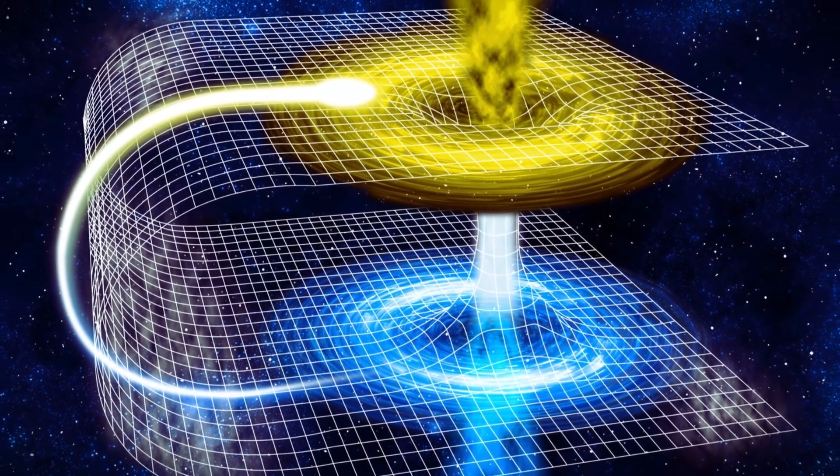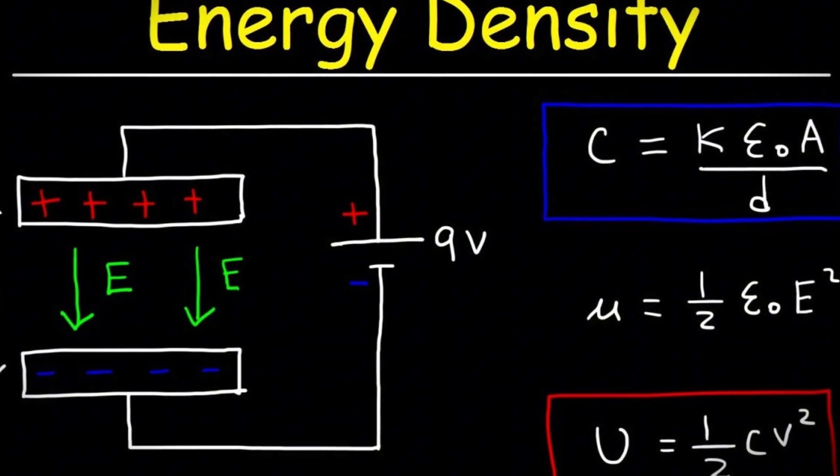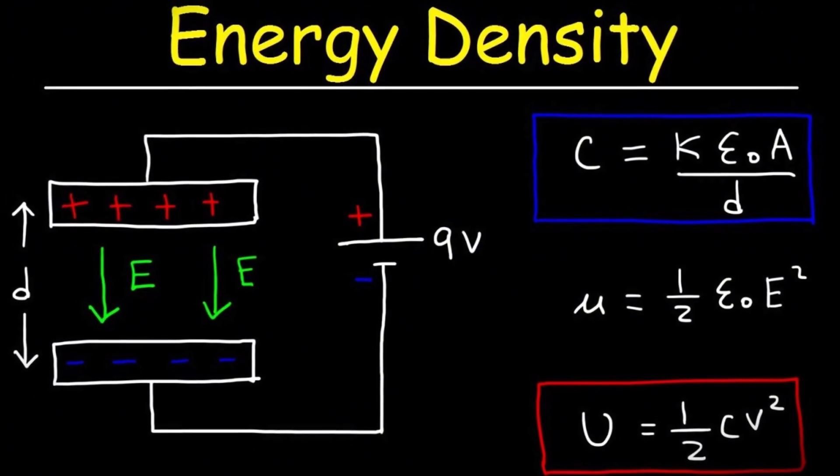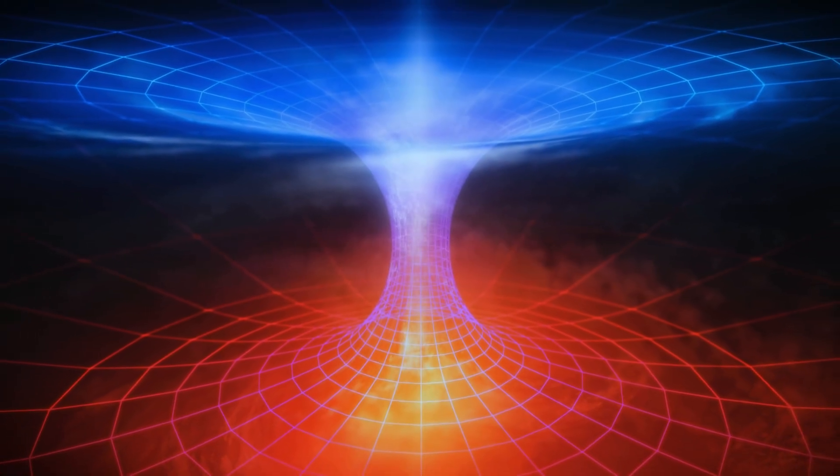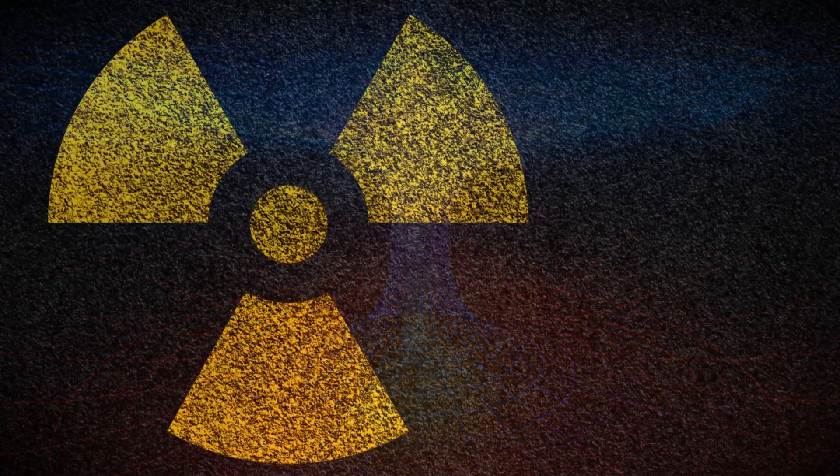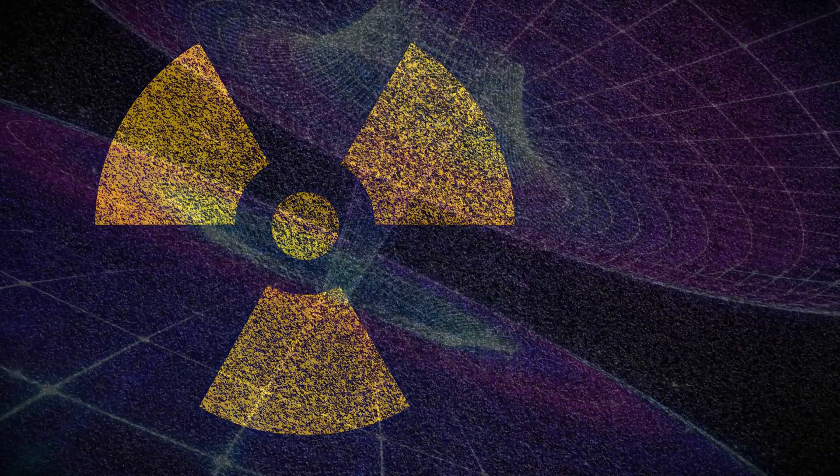Wormholes: Einstein's bait and switch. The bad news first. Require exotic matter with negative energy density, which may not exist. Would collapse faster than a house of cards in a hurricane. Radiation feedback would turn you into a quantum smoothie.